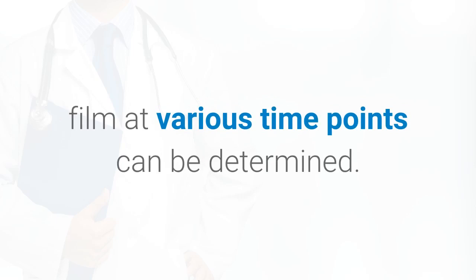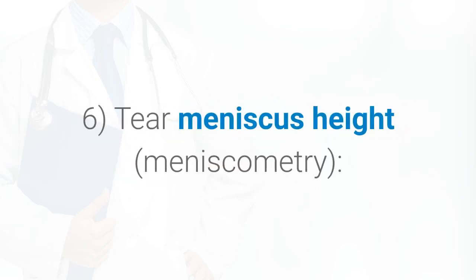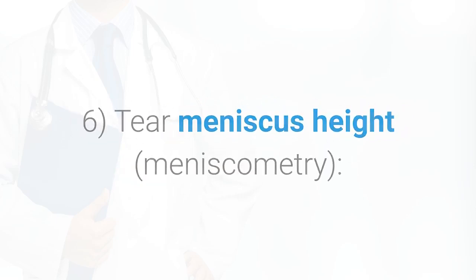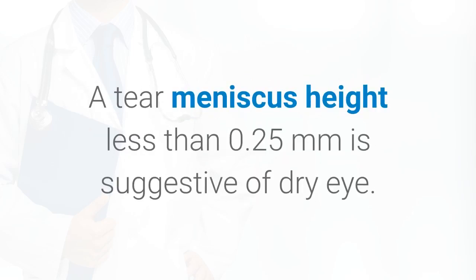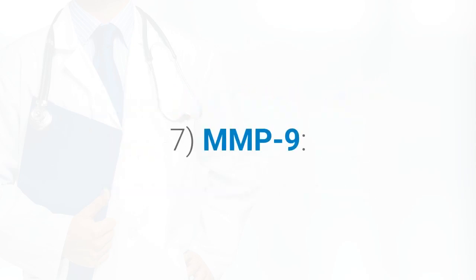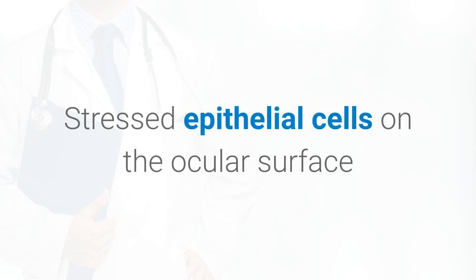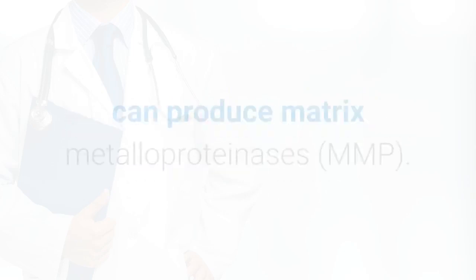Following fluorescein placement, the persistence of fluorescence in the tear film at various time points can be determined, allowing assessment of delayed tear clearance. The tear meniscus height can be used to estimate tear volume; a tear meniscus height less than 0.25 millimeters is suggestive of dry eye.